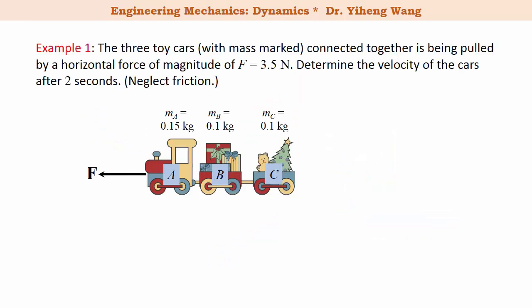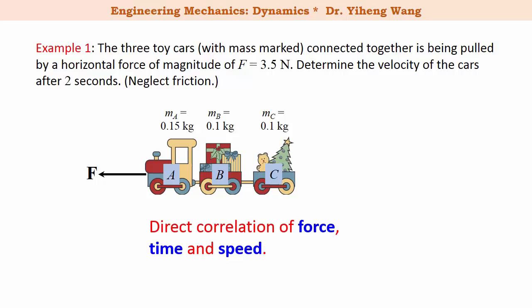Let's revisit a slightly modified example we worked on before using equations of motion. We have three toy cars connected together, being pulled by a constant force of 3.5 newtons, and we need to determine their velocity after two seconds. For this problem we're looking at a direct correlation of force, time, and speed, so the most ideal way to solve it is by applying the principle of linear impulse and momentum.